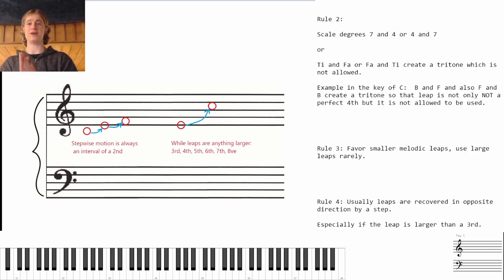Rule number two: Scale degrees seven and four, or four and seven, or in other words Ti and Fa or Fa and Ti in Do Re Mi Fa Sol La Ti Do, create a tritone which is not allowed. So if we're in the key of C and we go up to that seventh degree or the seventh note in the scale which is B and we connect it to the fourth note in the scale which again from this C is F. The fourth note in the scale is F.